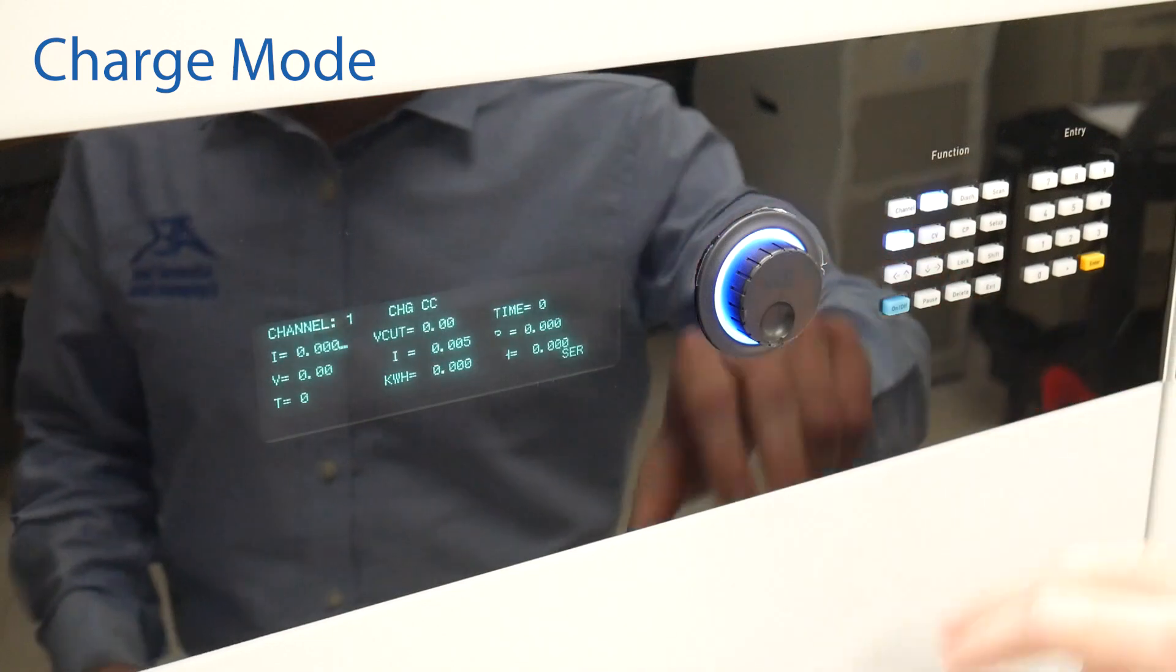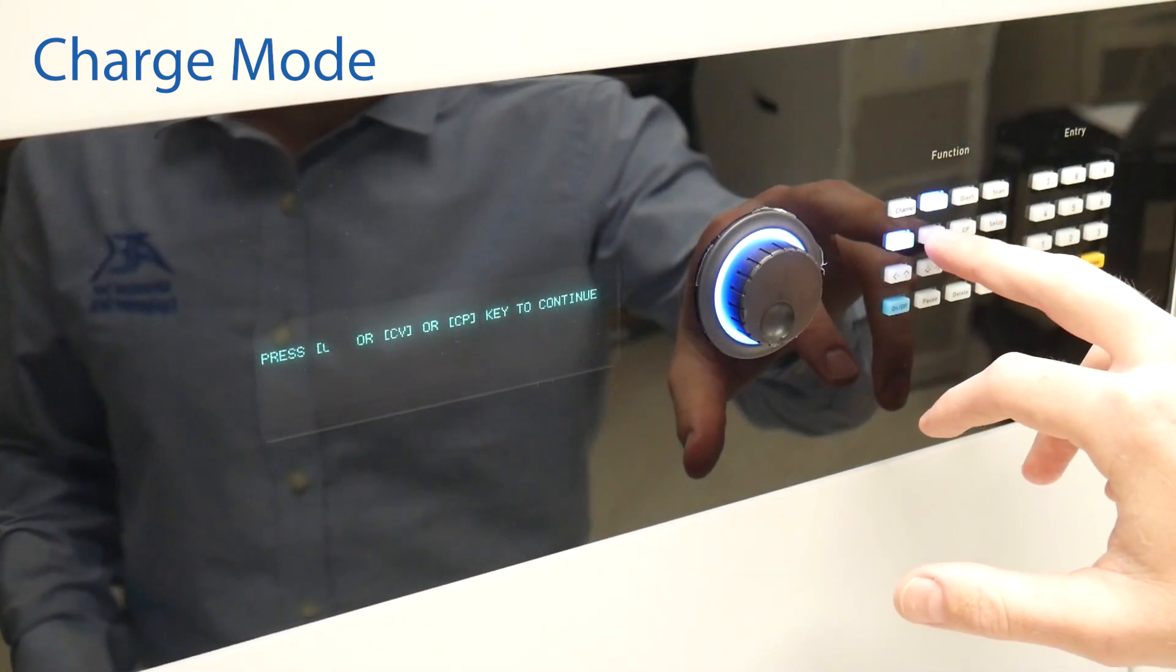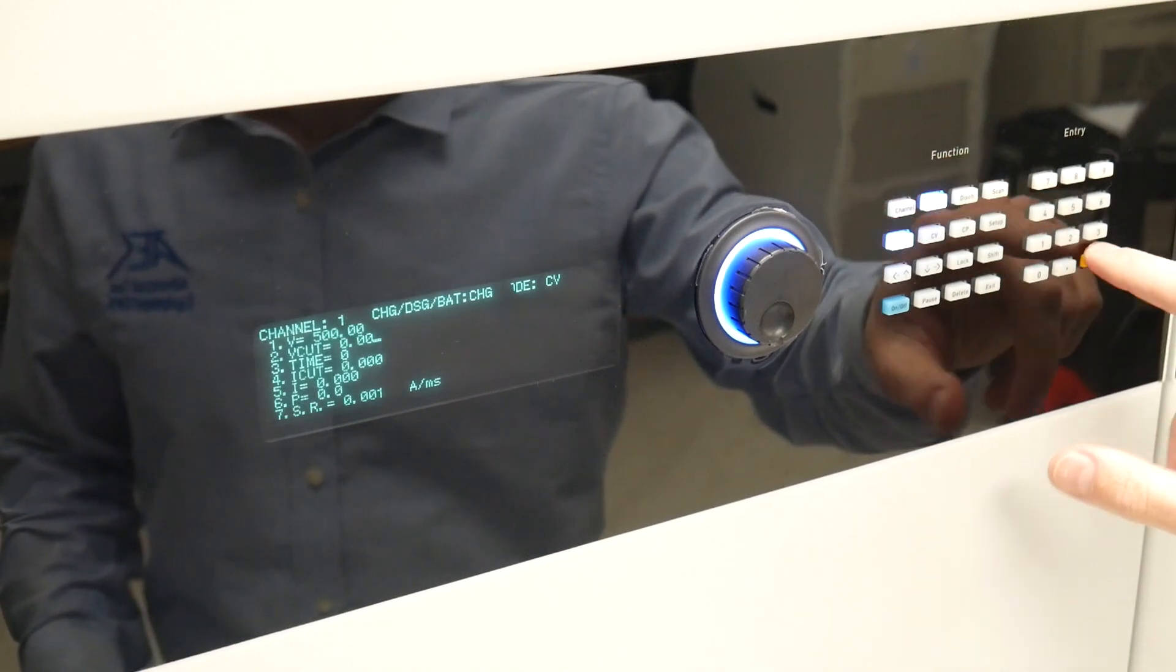On the initial screen you can parallel multiple 200 kilowatt units. In this case we will be using the standalone unit only.